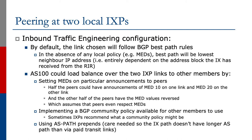Inbound traffic engineering by default will also follow BGP best path rules. In the absence of any local policy, the best path will be the lowest neighbor IP address, which becomes entirely dependent on the address block the IX has received from the regional internet registry. AS100 could load balance over the two IXP links to other members by setting MEDs on particular announcements to peers — half the peers could have announcements of MED10 on one link and MED20 on the other link to the other IX, and the other half have the MED values reversed. This assumes that the peers will respect the MEDs being sent.